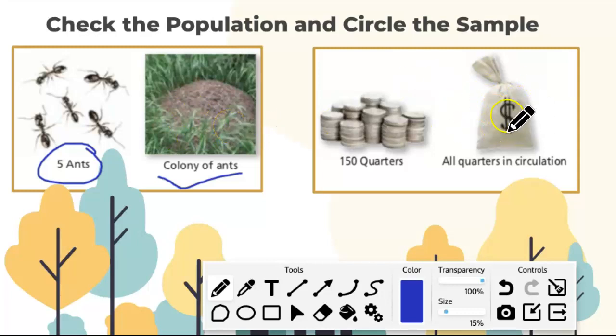It may not be a good sample, it depends on the population, but that will be a sample, not taking the entire colony. On the second example, we have 150 quarters and all quarters in circulation. So the population will be all quarters in the circulation. And we're going to say, I didn't follow the direction. Check the population and circle the sample. So the sample is the 150 quarters, and the bag of quarters that is in circulation is your population.